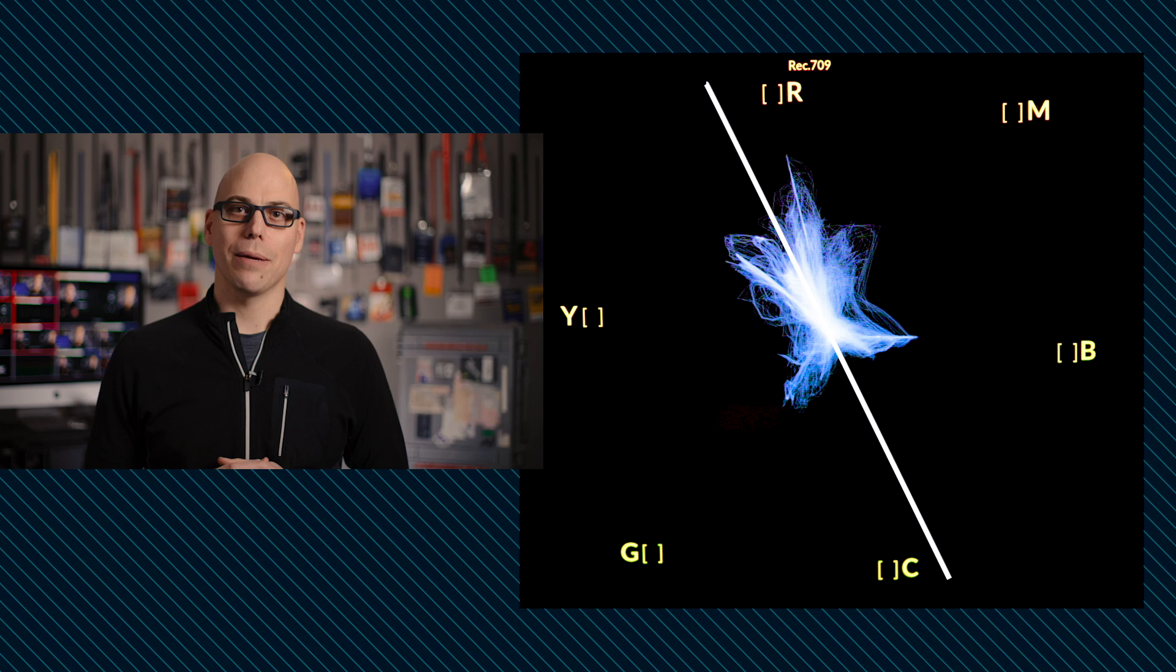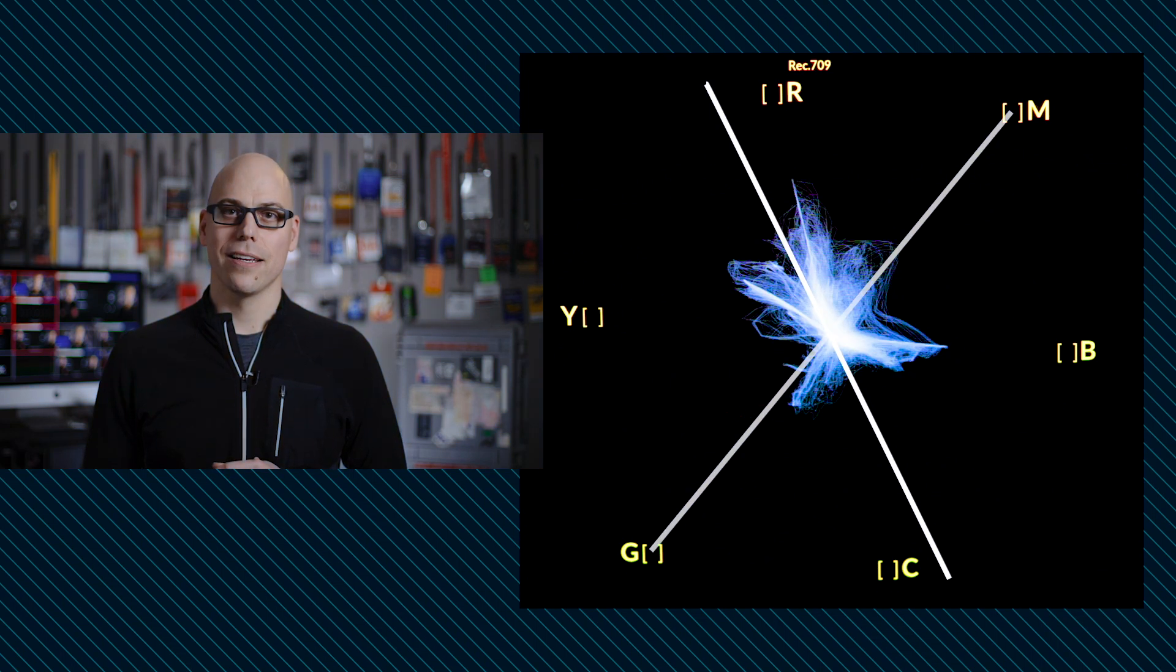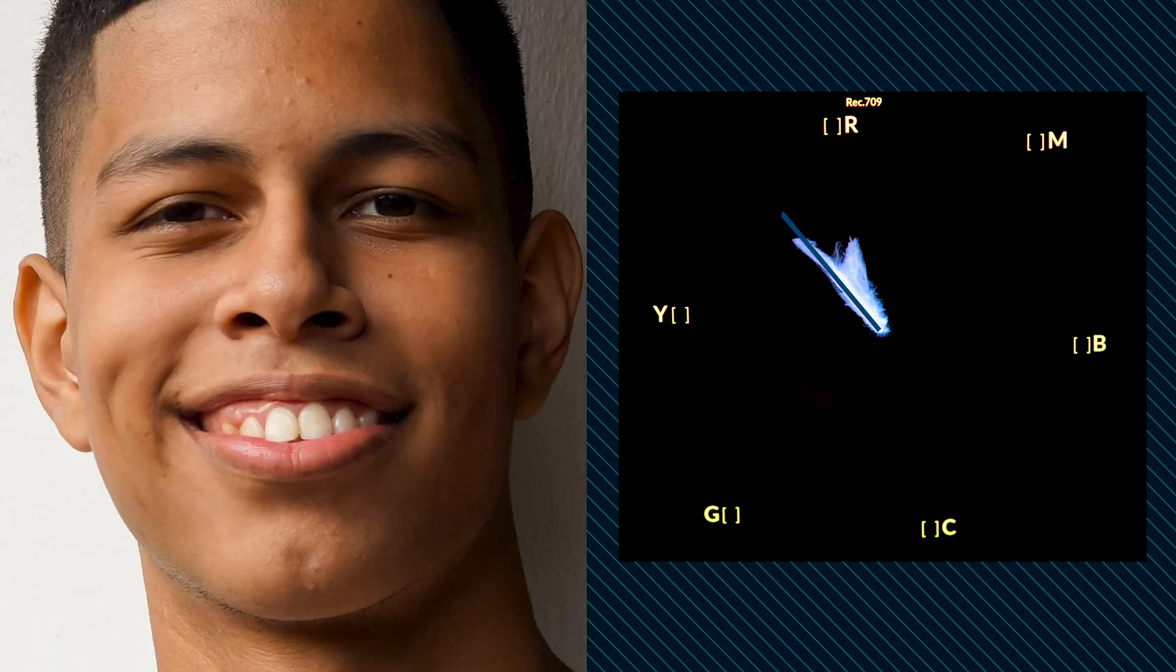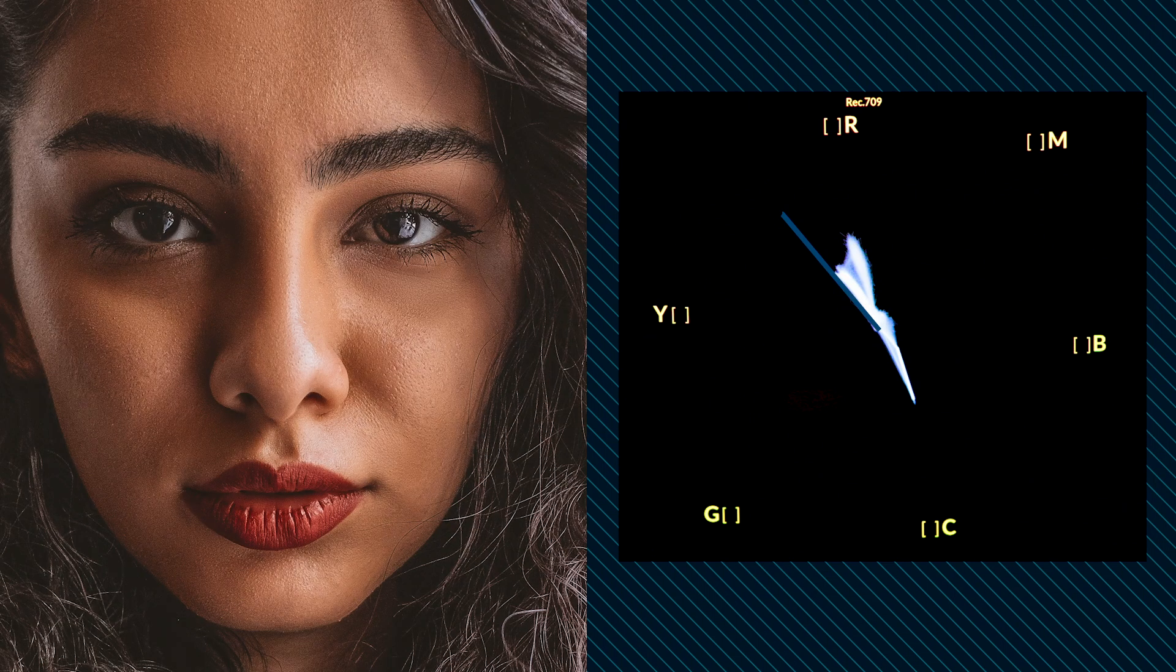White balance controls move color temperature along the blue-orange axis, and tint controls move colors along the green and magenta axis. Flesh tones, no matter what the ethnicity of a person, under white light appear along the I-line axis of the vectorscope graticule, which is an old technical holdover from the days of black and white TV. Sometimes this line is referred to as the FTL, or flesh tone line.